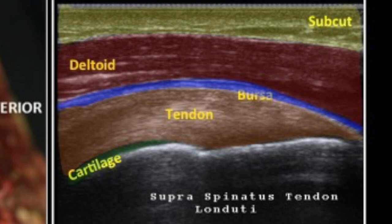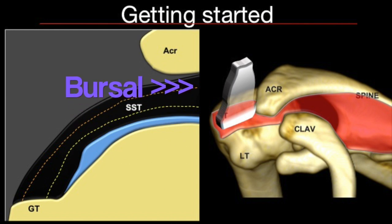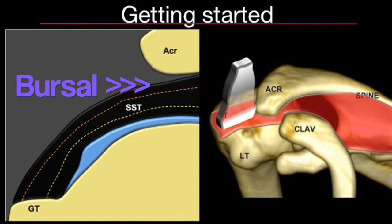The layers are: subcutaneous fat, the deltoid muscle belly, the subacromial subdeltoid bursa, the echogenic rotator cuff tendon, and the hypoechoic cartilage. The rotator cuff tendon has two surfaces — the articular surface, which is close to the joint along the humeral cartilage, and the bursal surface, which abuts the subacromial subdeltoid bursa or acromion.